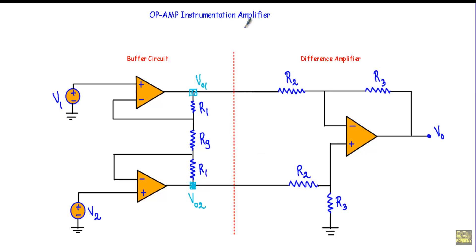The instrumentation amplifier fulfills all these requirements. An instrumentation amplifier is a kind of difference amplifier which has inbuilt input buffers — this is one operational amplifier buffer, and this is another buffer — which eliminate the need for input impedance matching. The instrumentation amplifier is designed to have very low DC offset, low drift, low noise, very high open loop gain, very high common mode rejection ratio, and very high input impedance.